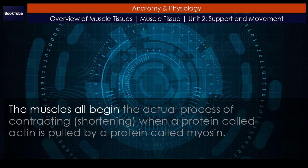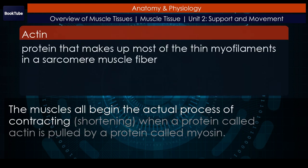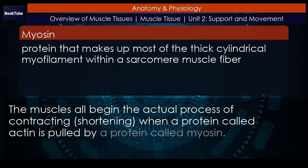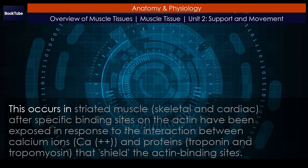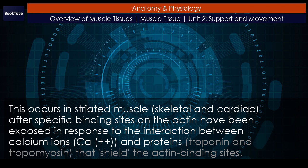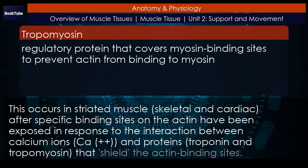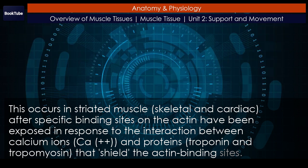The muscles all begin the actual process of contracting, shortening, when a protein called actin is pulled by a protein called myosin. This occurs in striated muscle — skeletal and cardiac — after specific binding sites on the actin have been exposed in response to the interaction between calcium ions (Ca²⁺) and proteins, troponin and tropomyosin, that shield the actin binding sites.